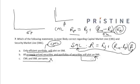So the question asking which statement is most likely correct regarding the Capital Market Line and Security Market Line — the answer will be option B, which states that all properly priced securities and portfolios of securities will plot on the Security Market Line.